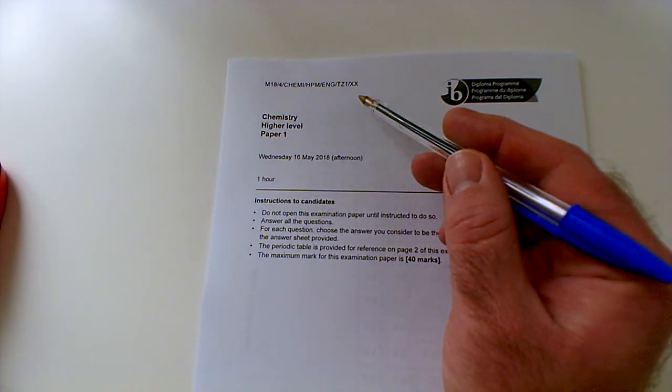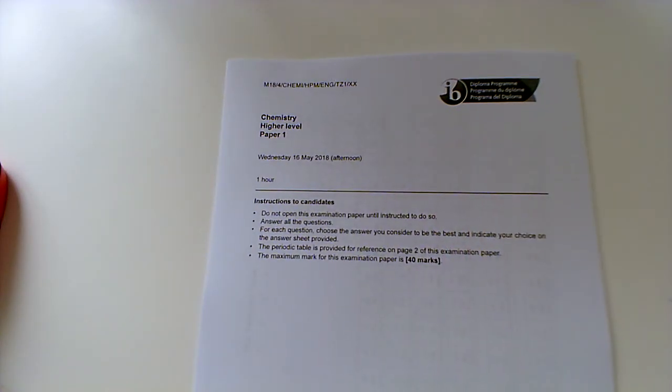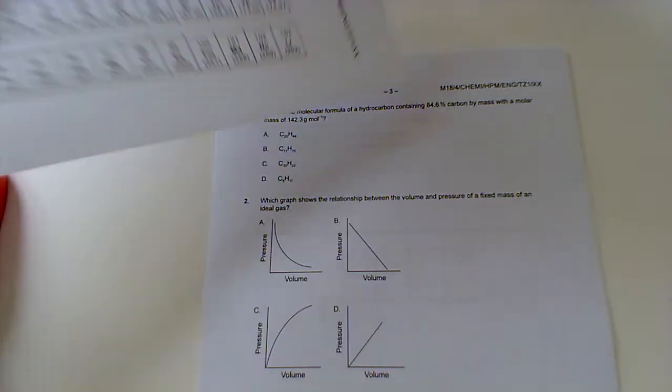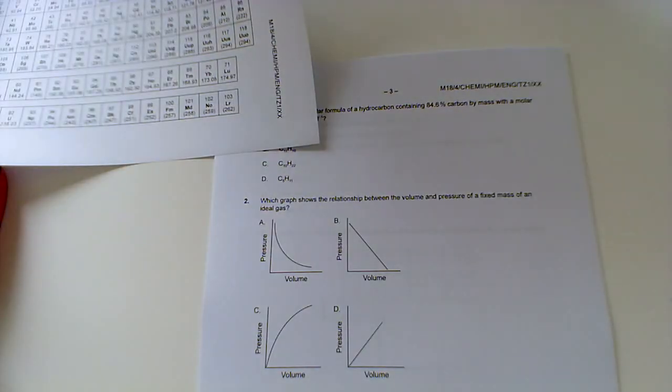This is May 2018, Time Zone 1, Higher Level Chemistry. Paper 1. We have the periodic table cut off the side, and then we've got question 1.